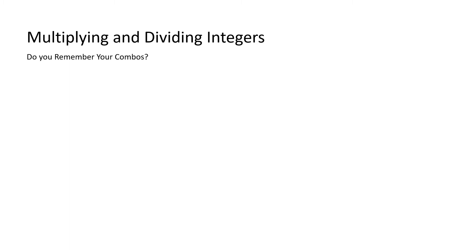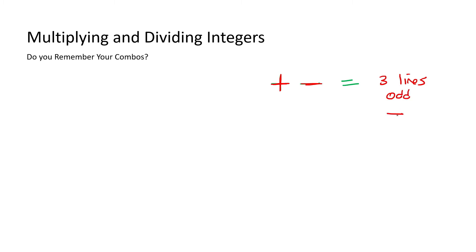Remember that if you have, for example, a plus next to a minus, then what did that become? Well, the way we did that was we counted how many lines there are. So if there's one, two, three lines, the number three is odd. And any time it's odd, we put that as a minus.